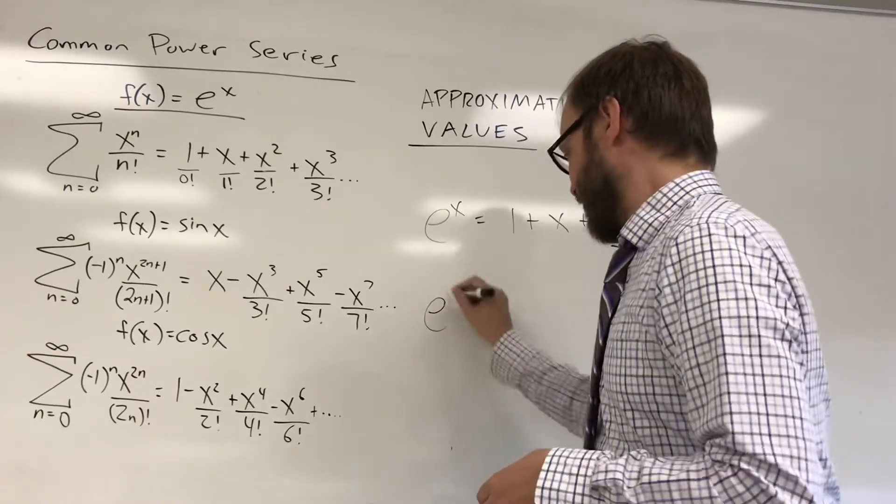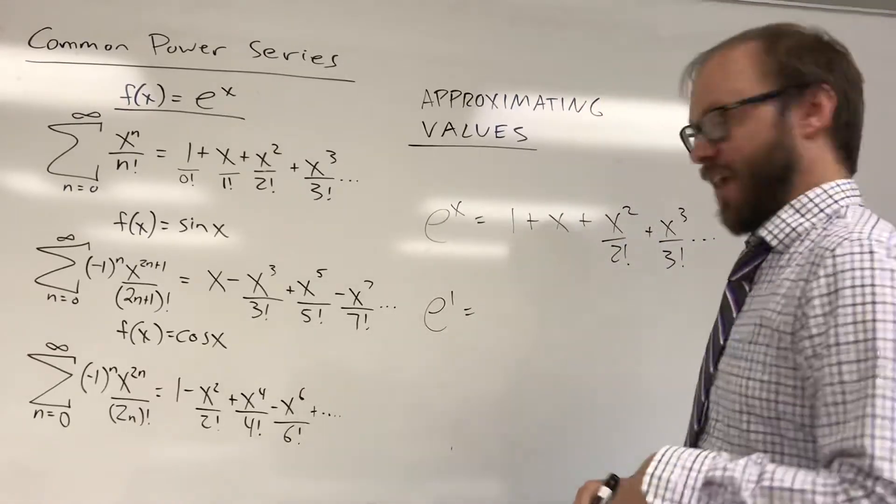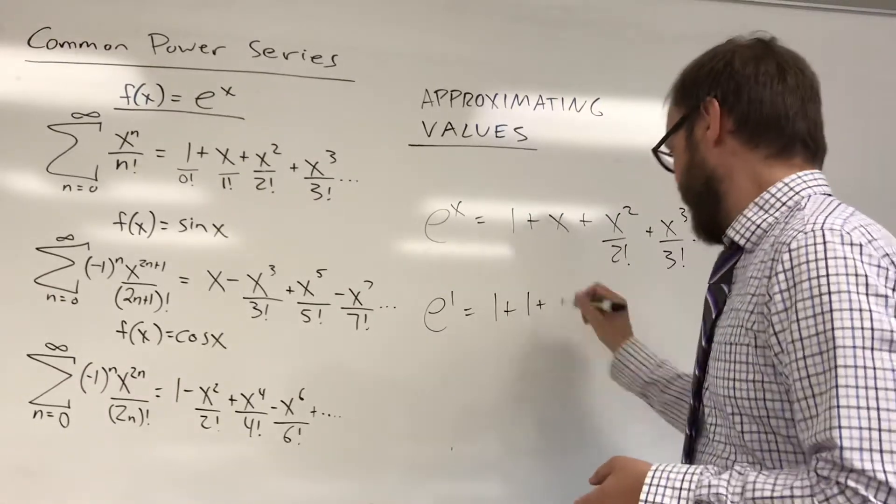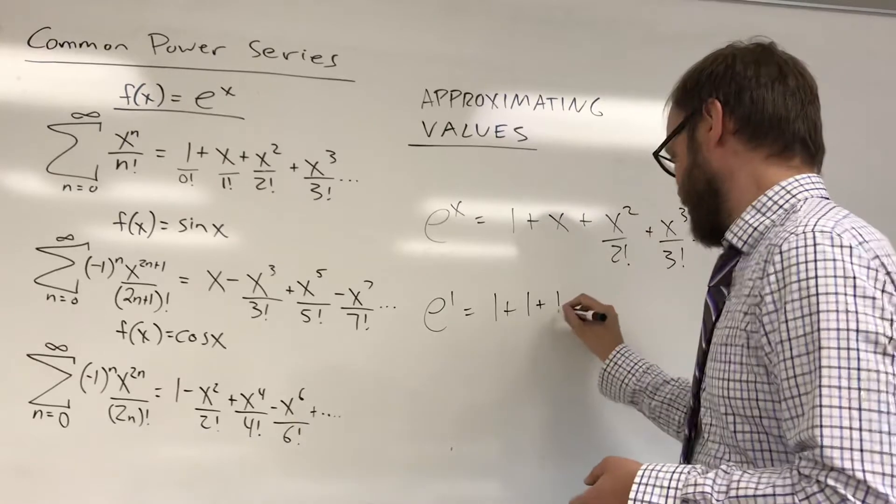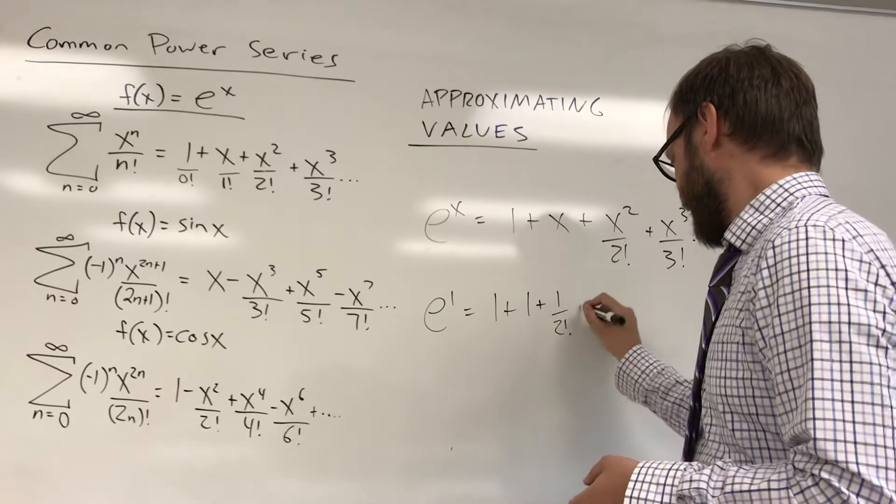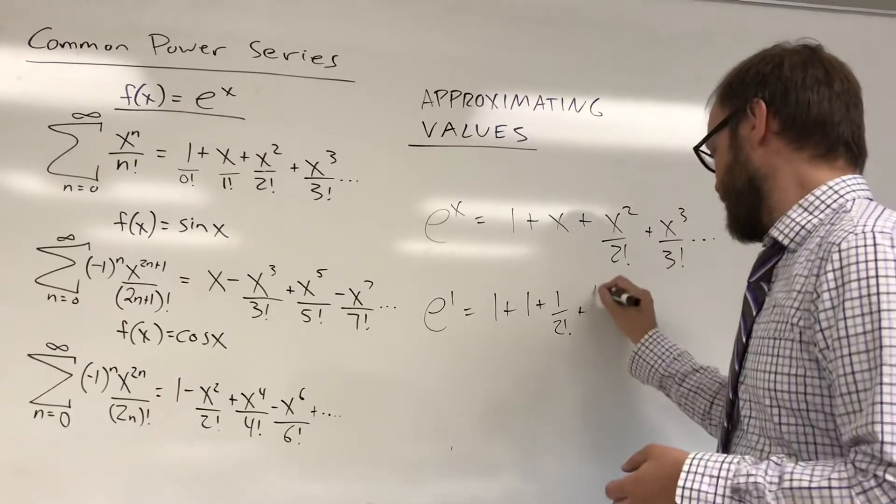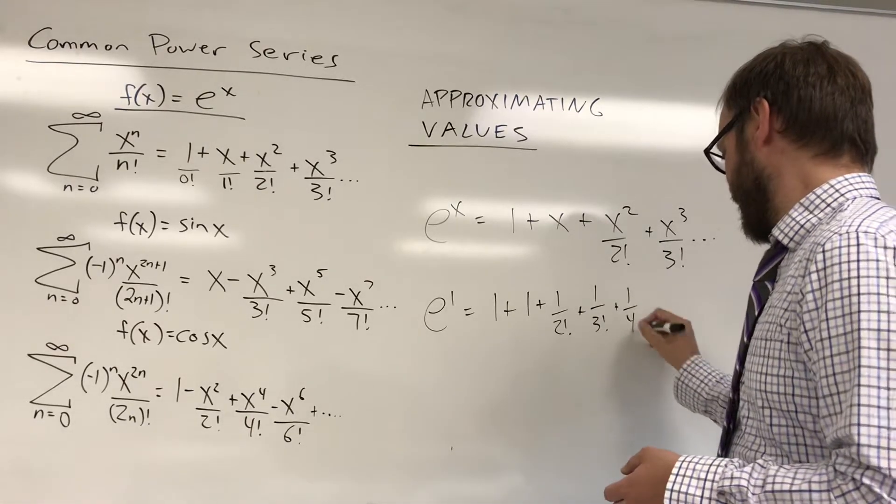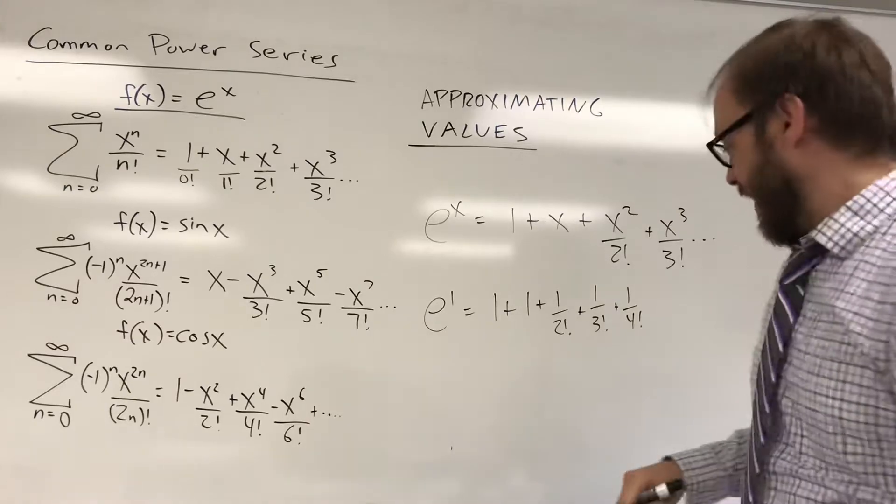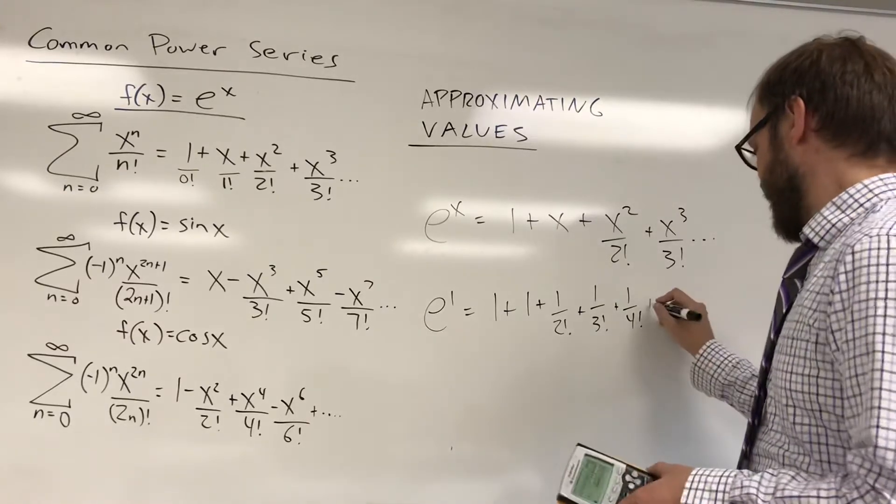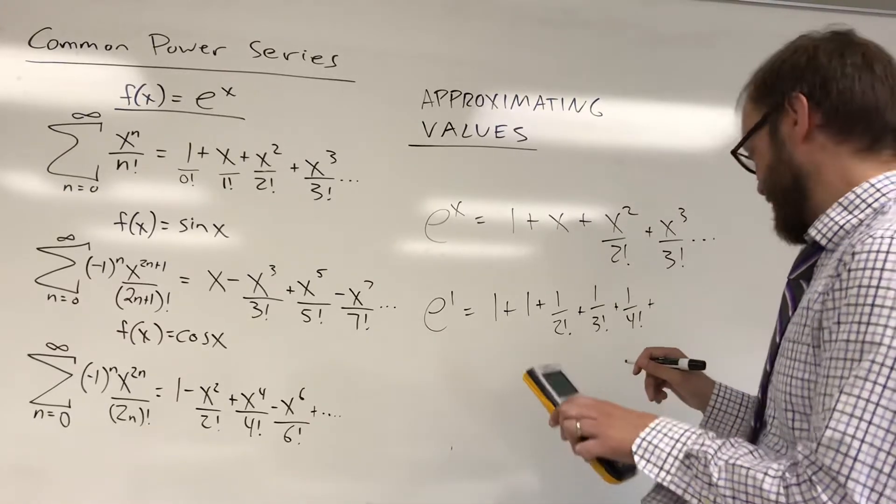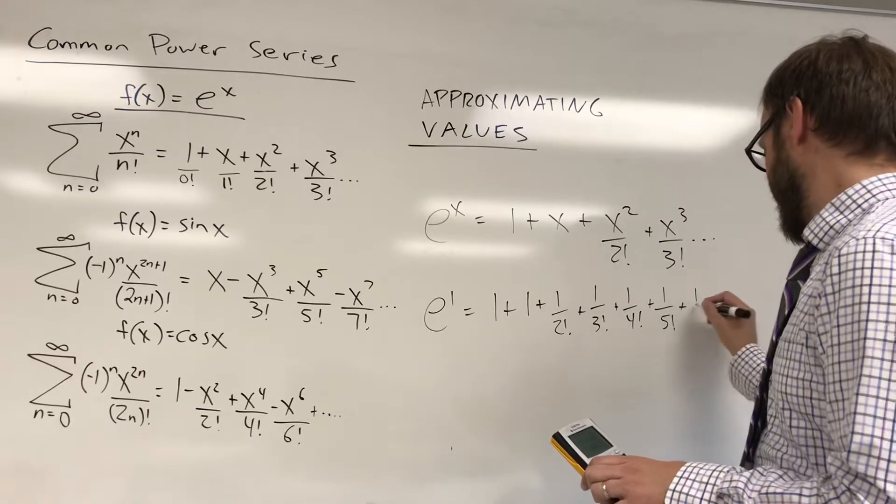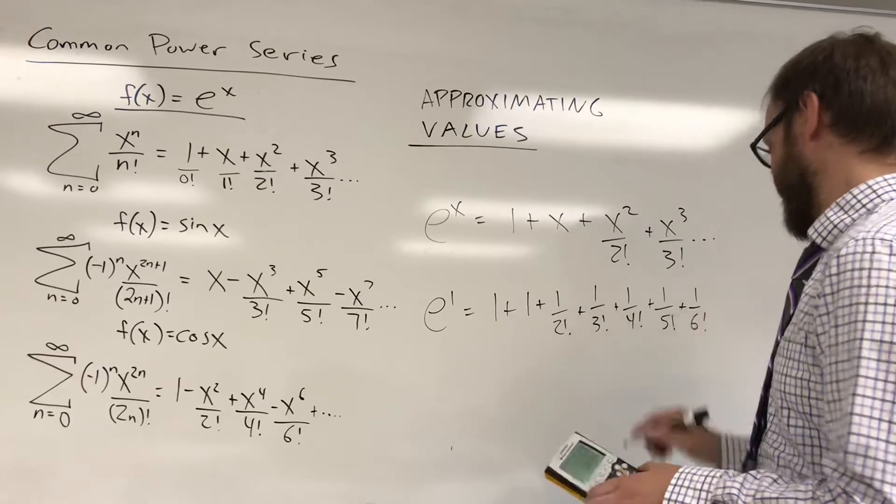If I want to find e to the first I'm just substituting in 1 for x and so that's going to be 1 plus 1 plus 1 squared over 2 factorial plus 1 cubed over 3 factorial plus 1 to the fourth over 4 factorial and so on. And actually I'm going to write this out, I think I went out to 1 over 6 factorial.